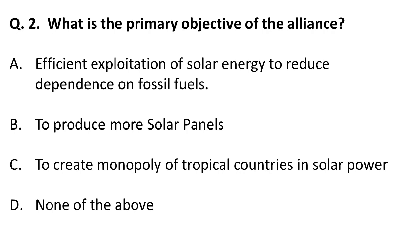What is the primary objective of the International Solar Alliance? The primary objective is efficient exploitation of solar energy to reduce dependence on fossil fuels. Remember this — efficient exploitation of solar energy to reduce dependence on fossil fuels is the primary objective of this Solar Alliance.